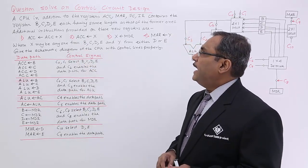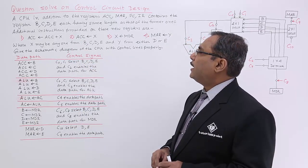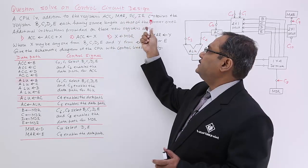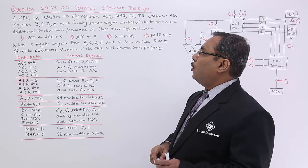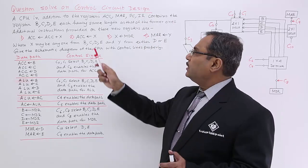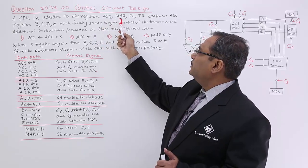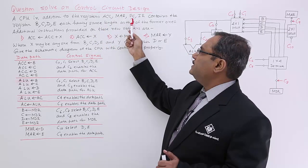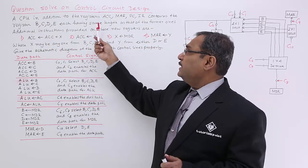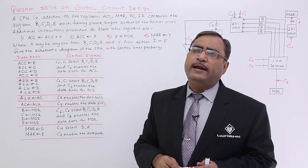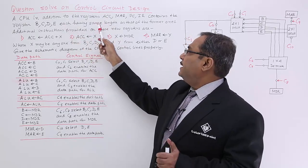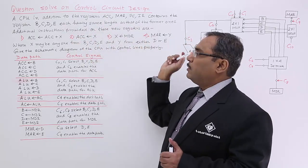A CPU, in addition to the registers accumulator, memory address register, program counter, and instruction register, contains the registers B, C, D, E. So they are containing ACC, MAR, accumulator, memory address register, program counter, instruction register, along with BCDE. We know that accumulator can also be called as A register. Each register has the same length as the former ones.